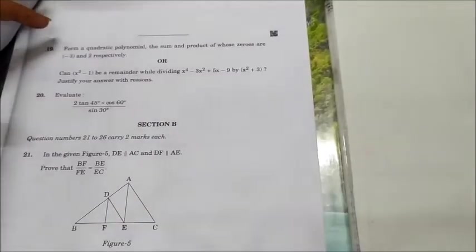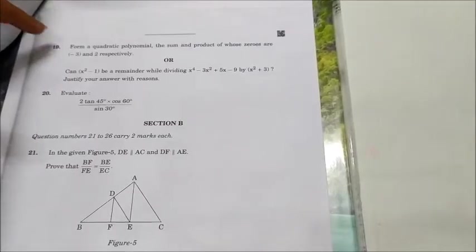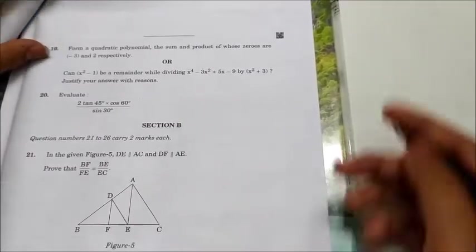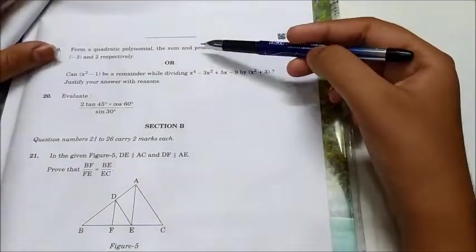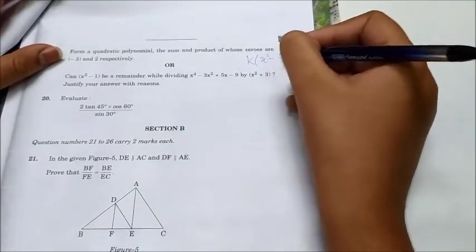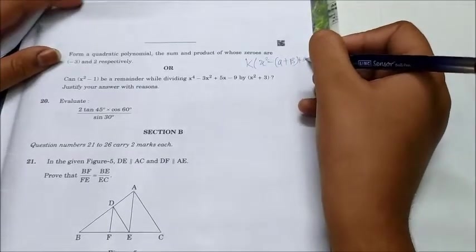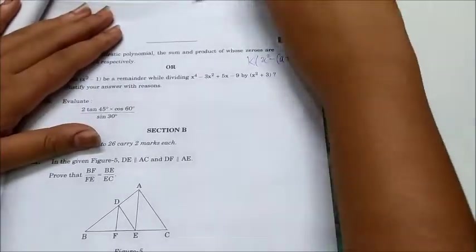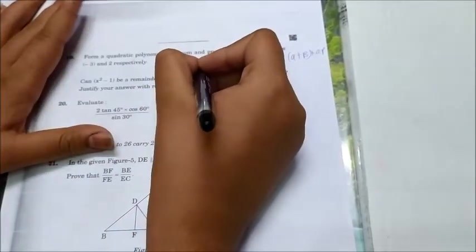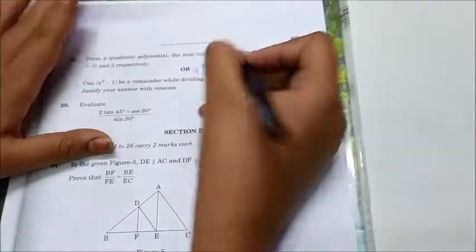Next question is question number 19: Form a quadratic equation. The sum and the product of zeros are -3 and 2 respectively. So when you will put this in the formula k = x² - (α + β)x + αβ, you will get the answer x² + 3x + 2. This will be the required quadratic polynomial.